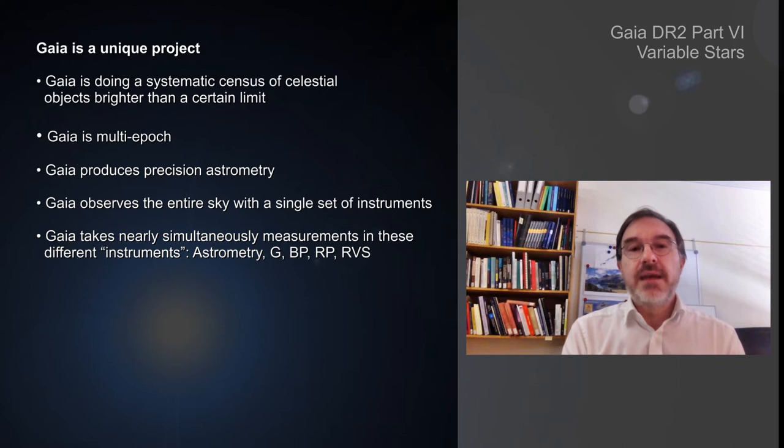Gaia is multi-epoch, so for every object it observes it has several measurements, a mean of 70 measurements over the five years. Gaia produces precision astrometry and observes the entire sky with a single set of instruments.